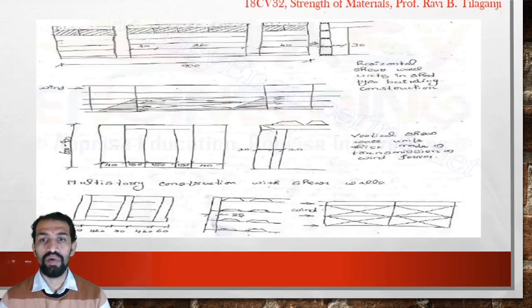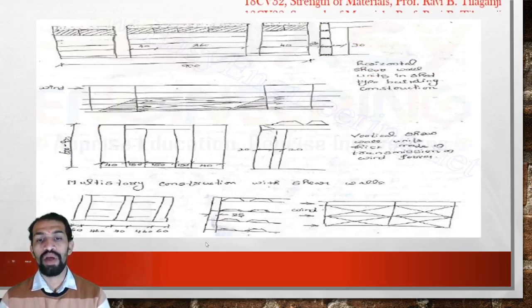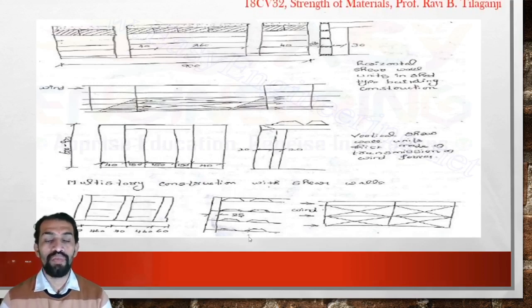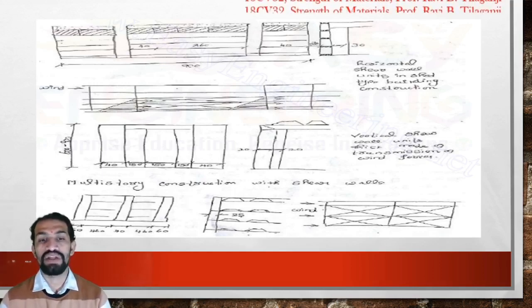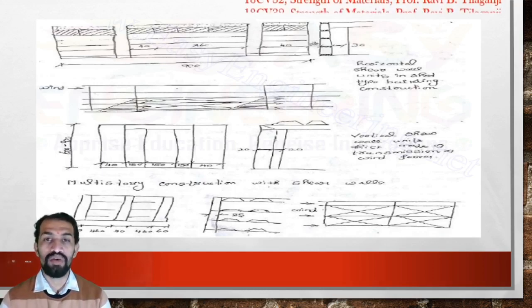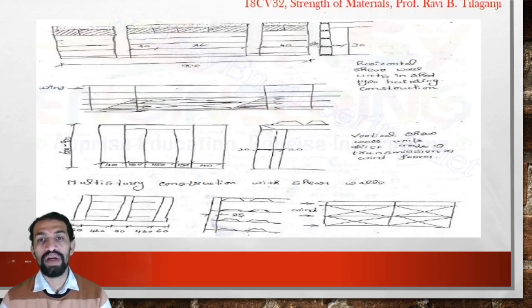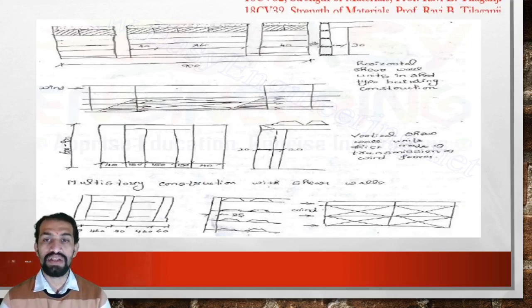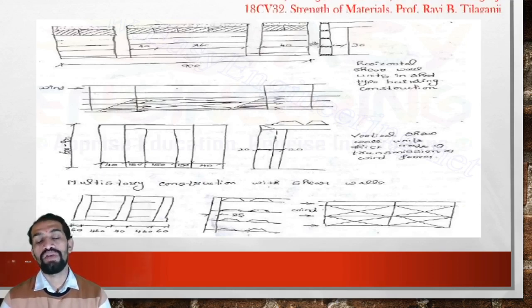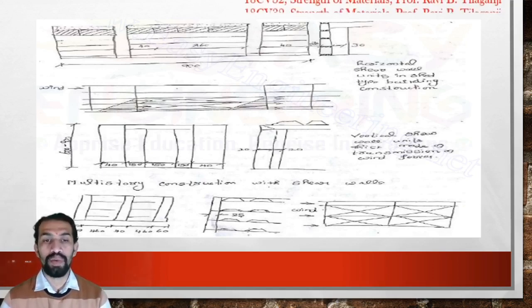Here we can see some diagrams of the flange type and frame type of shear walls. Multi-story construction with shear walls is a must, and they vary from half a meter to 1 meter in distance, or from floor to floor particularly with a continuous part.